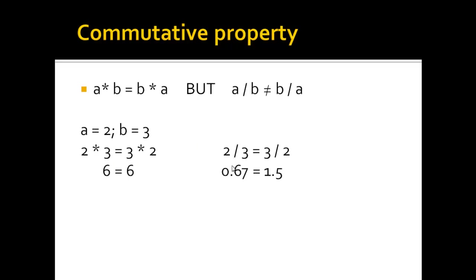In fact, here, 2 thirds are 0.67 in decimal, which is not equal to 1.5. You can see here, indeed, for multiplications, it's allowed to change the order of the elements. However, for divisions, you will get different results, so it's not allowed to do that.